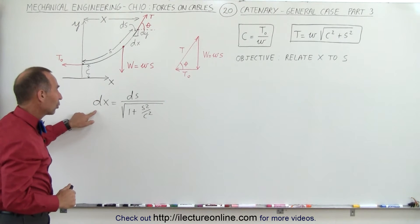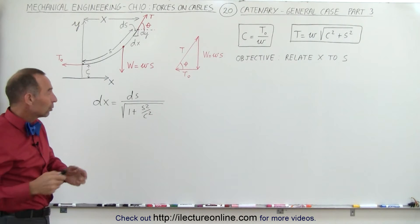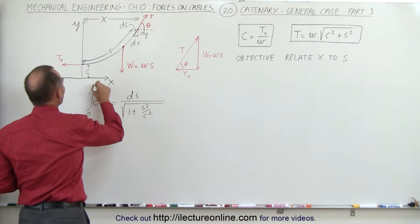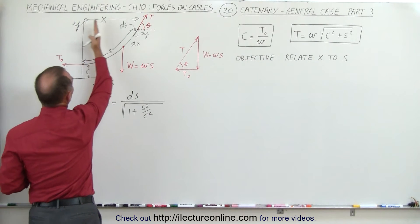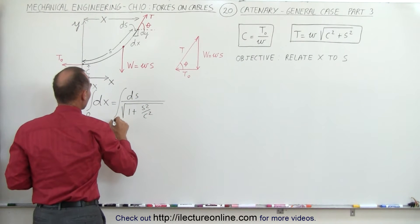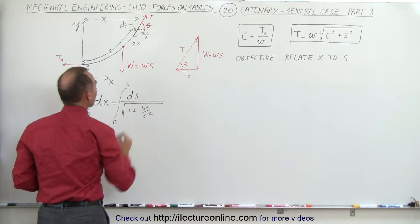Now with this equation what we can do is take the integral of both sides or integrate both sides. So we integrate the left side from 0 to x. Notice x is the distance from there to where it's attached. And we take the integral ds from 0 to the length of the cable s.